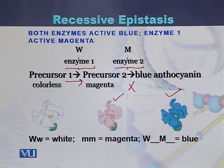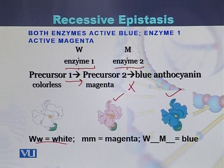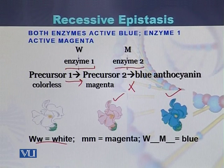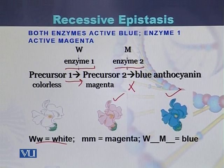If enzyme 1 also does not work, the color of the flower will be white. So white flowers have the genotype with the dominant allele in recessive form. Magenta flowers have the gene M in recessive form, while blue flowers have gene 1 in dominant form and gene 2 also in dominant form.